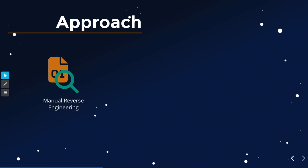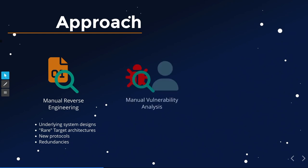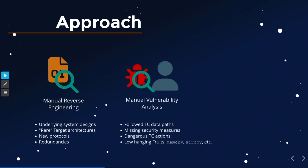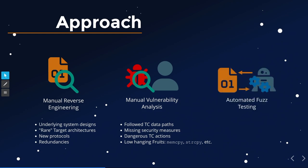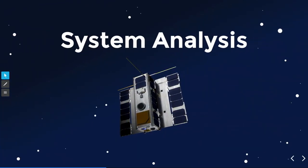Our approach on all three firmware images involved manual reverse engineering, looking at underlying system design, dealing with rare target architectures like AVR32, and many new protocols. We did a manual vulnerability analysis — going through telecommand data paths, looking for missing security measures, dangerous telecommand actions like memory writes, and low-hanging fruit like malicious memcpy or strcpy with uncontrolled size fields. We also did automated fuzz testing, though there was sometimes no emulator for the architecture. More on fuzzing at TyphoonCon, where there will be a related talk.